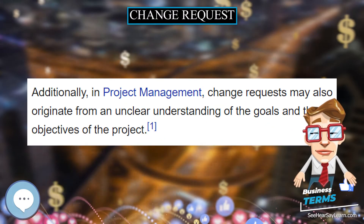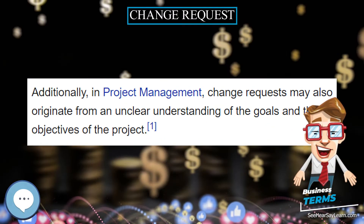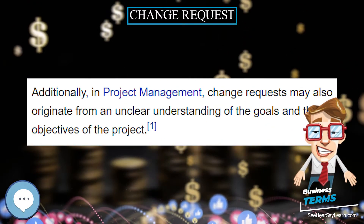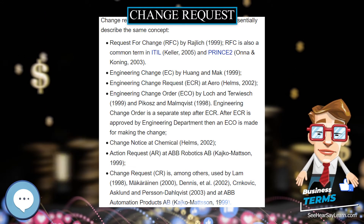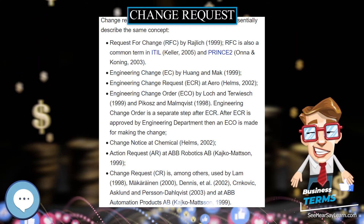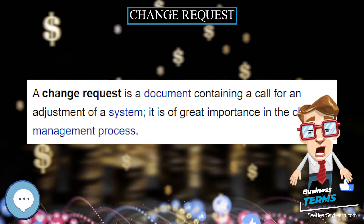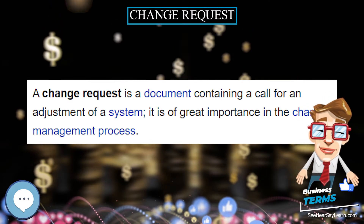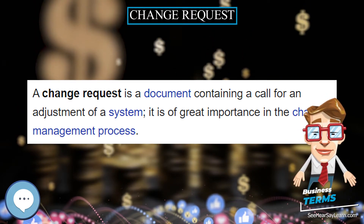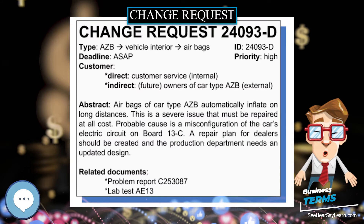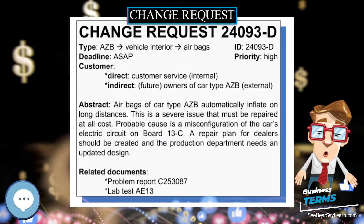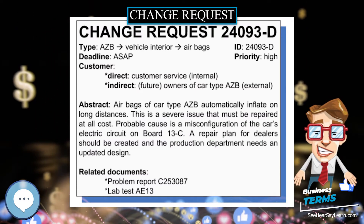Important elements of a change request are an ID, the customer, the deadline if applicable, an indication whether the change is required or optional, the change type, often chosen from a domain-specific ontology, and a change abstract, which is a piece of narrative (Keller, 2005).